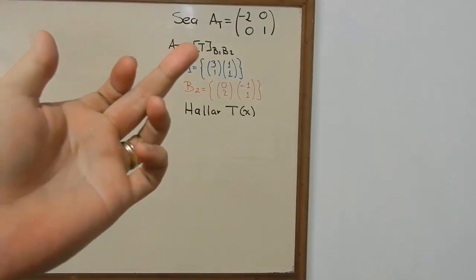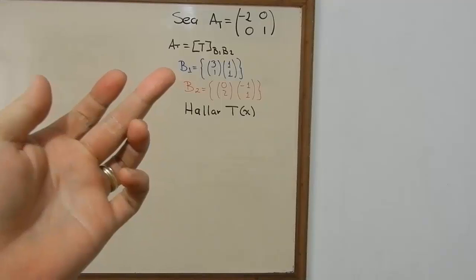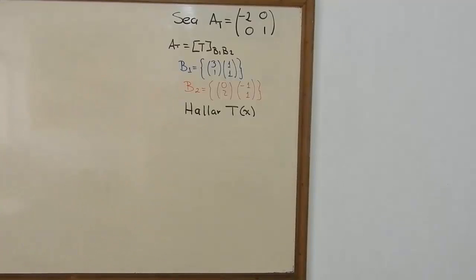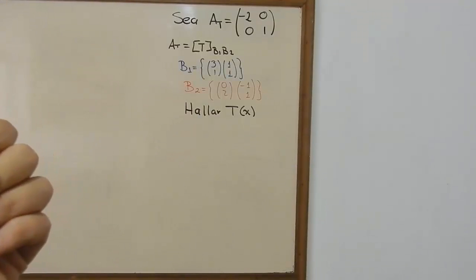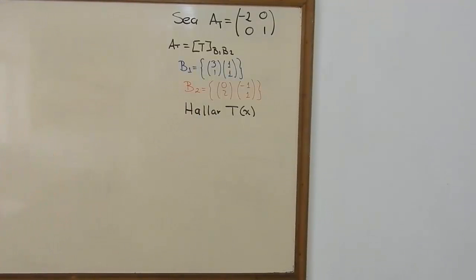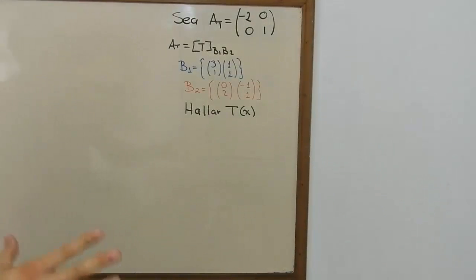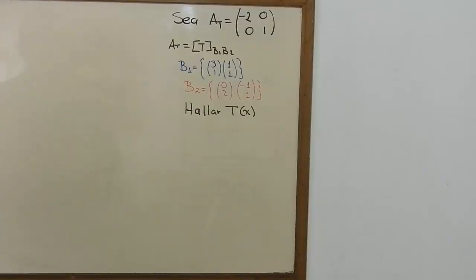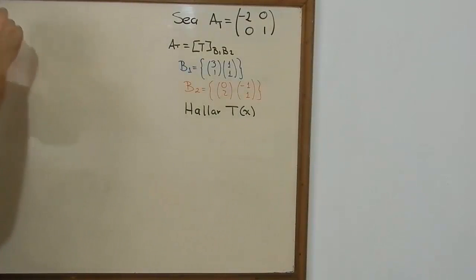We're going to talk about linear transformations in a non-canonical way. This is the data that we have: base 1 and base 2, as you can see on the board, and we also have the transformation matrix. We're going to need to find the transformation in a canonical way.